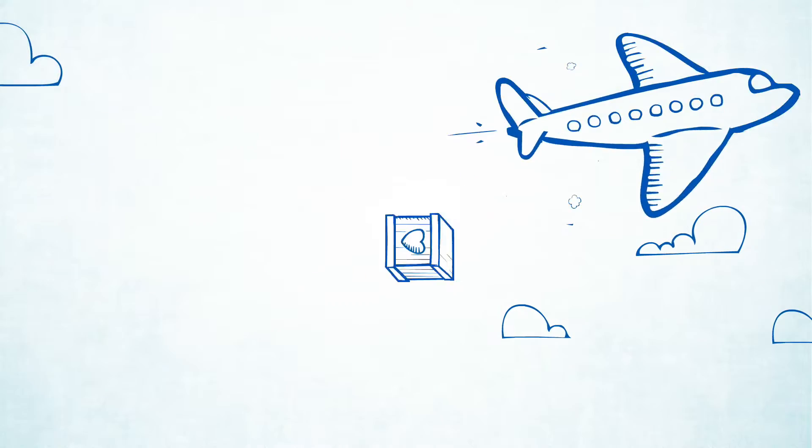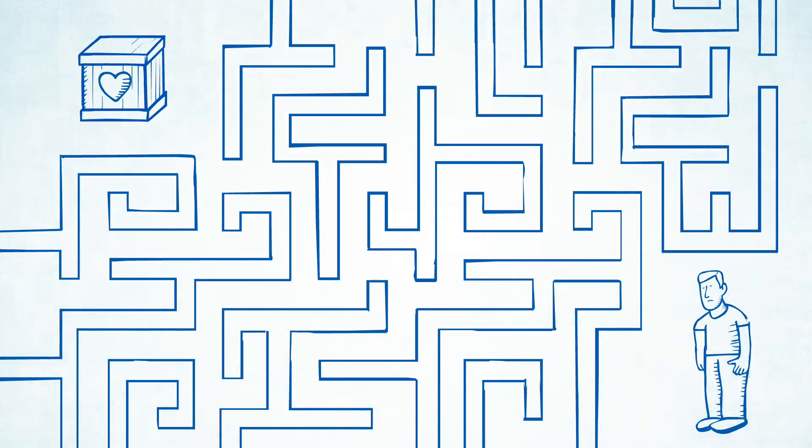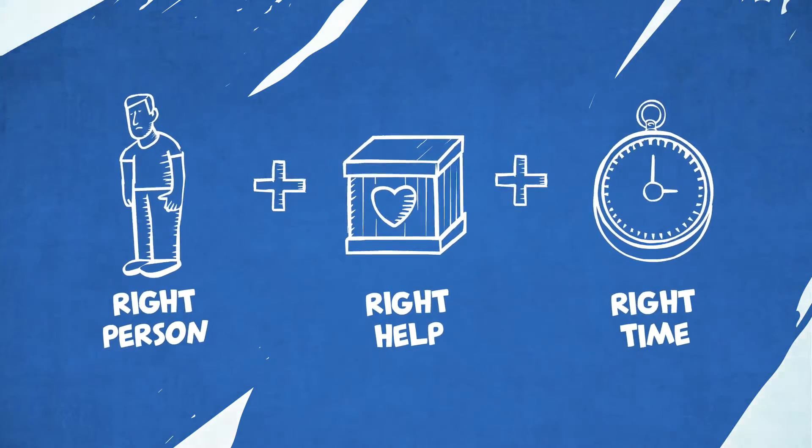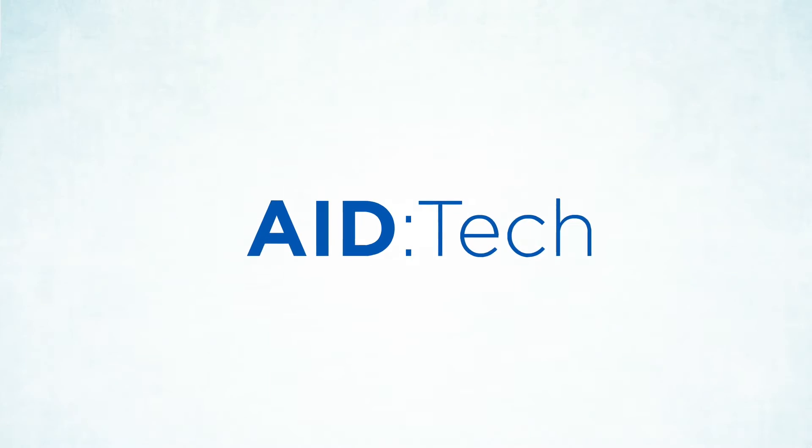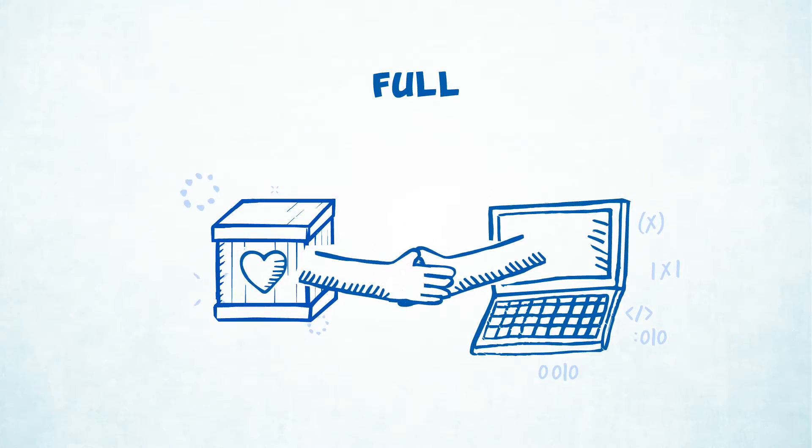Currently, aid is distributed by hand across the world and it's a very complicated process. Ensuring the right person gets the right help at the right time is critical. This is where Aidtech provides a solution, bringing aid and technology together to ensure a fully transparent process.